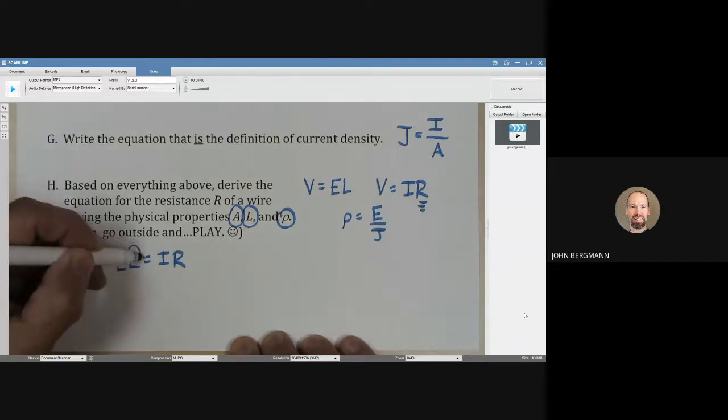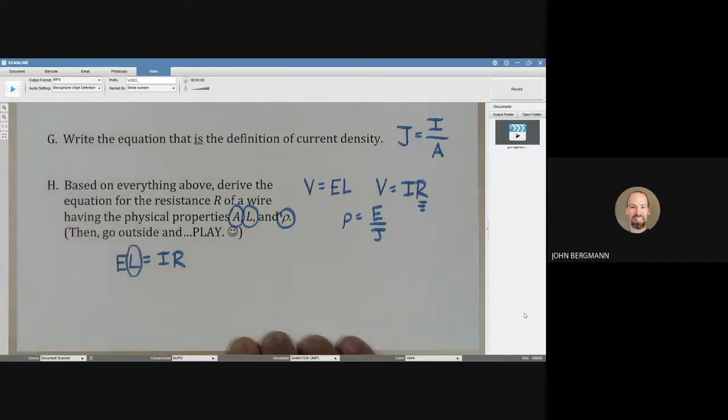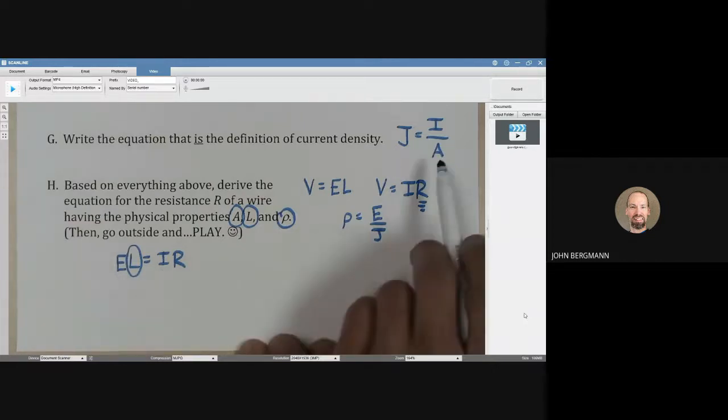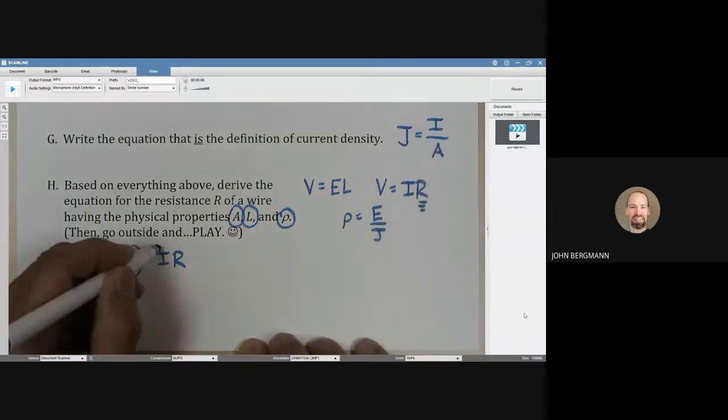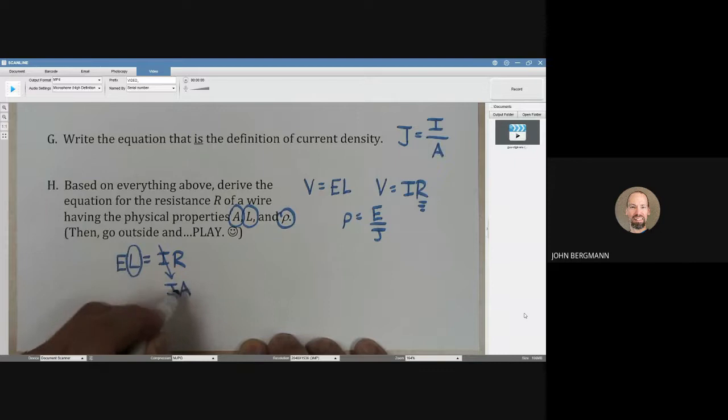L, we want to hang on to. But we need to get rid of I. How can we get rid of I? How about, let's use this top equation. I is equal to J times A. I is equal to J times A. And A is one of those that we want to hang on to. So, don't touch that.